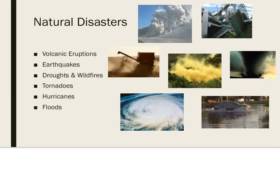There are many natural processes that can cause changes to the environment, and each natural process poses a unique set of hazards to humans and to the environment. Some natural hazards have predictable warning signs that indicate they are about to occur, while others occur unpredictably. Natural disasters include volcanic eruptions, earthquakes, droughts, wildfires, tornadoes, hurricanes, and floods.